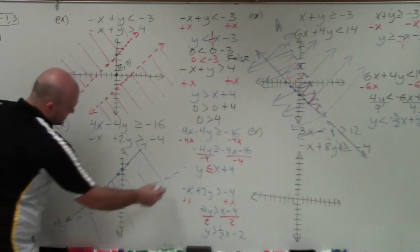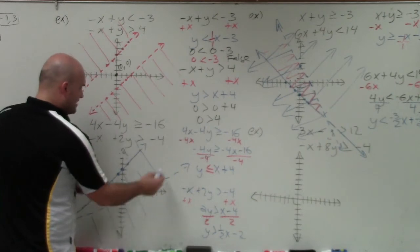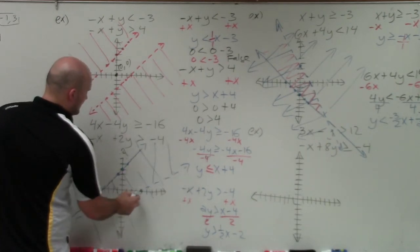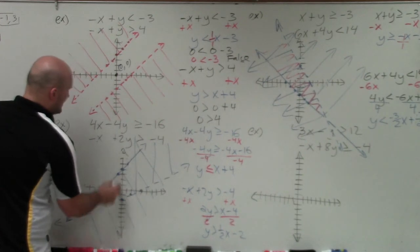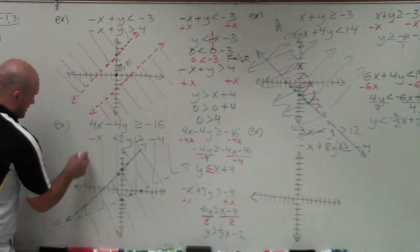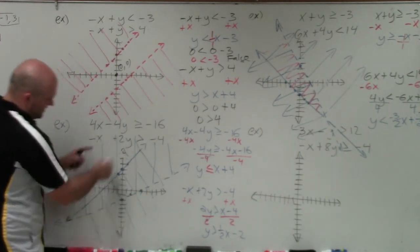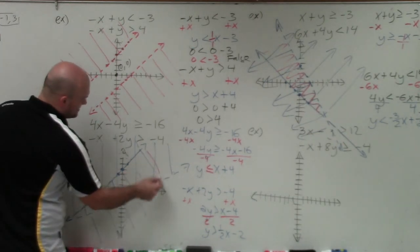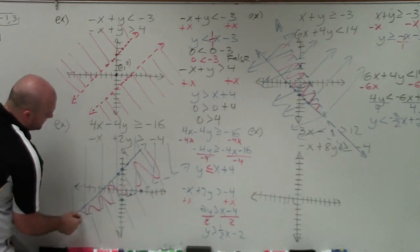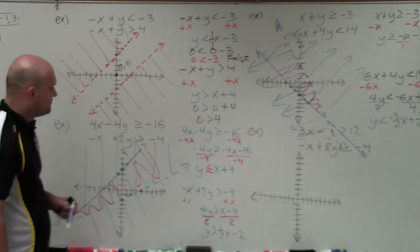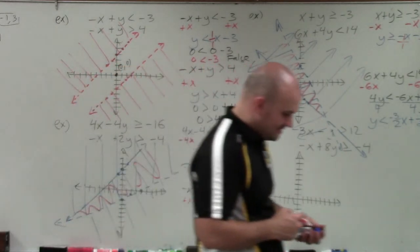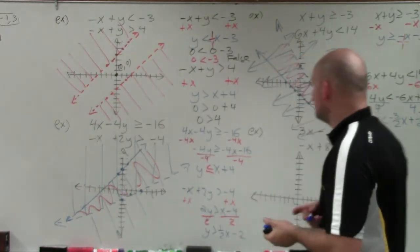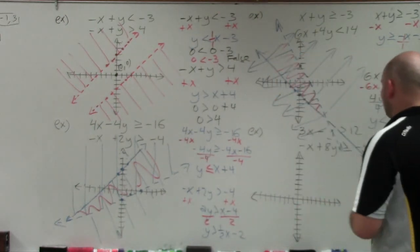They're intersecting, and since it's greater than, shade all values above the line. You can see that both solution sets intersect, and I'll use a red marker to highlight the feasible region. Now let's get to the last example, and I'll take it a little slower so I don't make those simple mistakes.